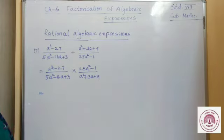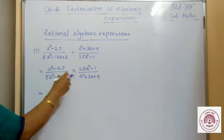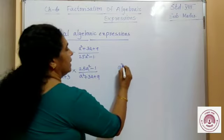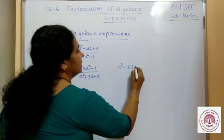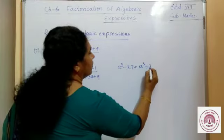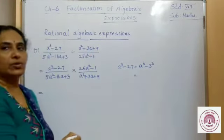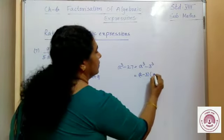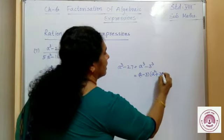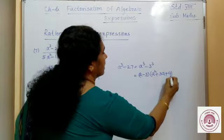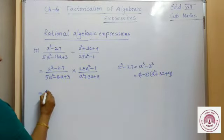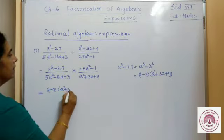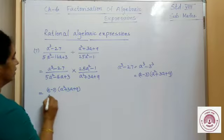Now, we will take each expression and factorize it separately. a³ - 27 is equal to a³ - 3³. This is of the form a³ - b³. Factors are (a - b), that is (a - 3) into (a² + 3a + 3²), that is 9. So, we can write (a - 3)(a² + 3a + 9).